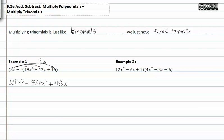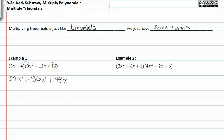Now moving on to the next term. Negative 4 times 9x² is negative 36x². Negative 4 times 12x is negative 48x, and negative 4 times 16 is negative 64.